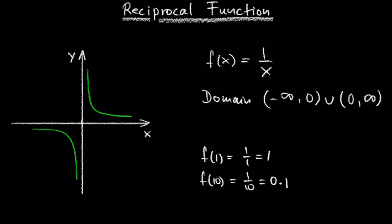When we plug in a 100, we get 0.01 and so on. But the output will never reach 0, right? So the 0 is not included in the range.